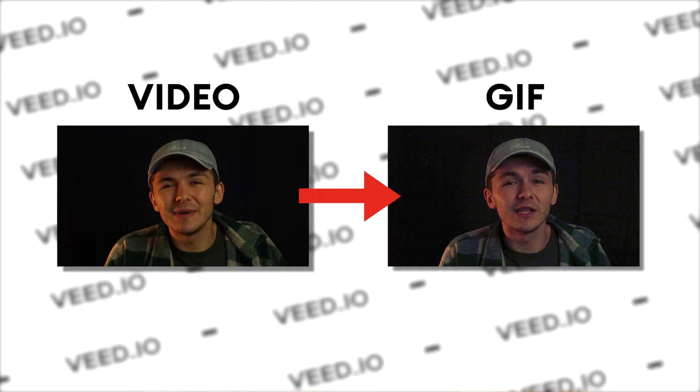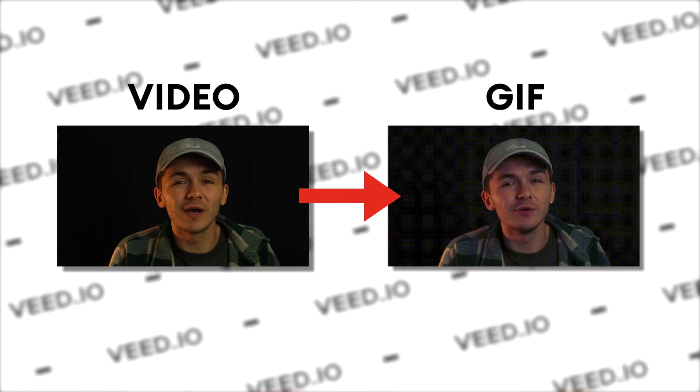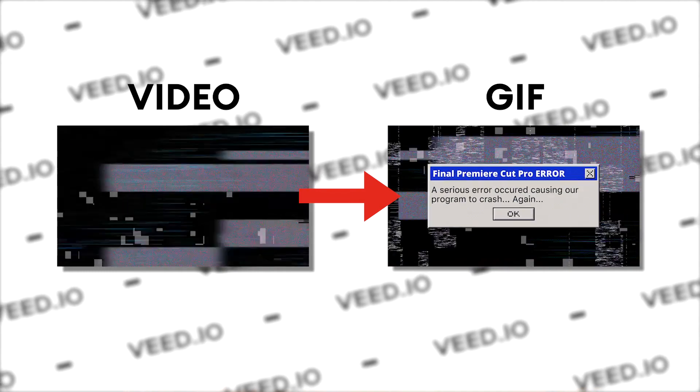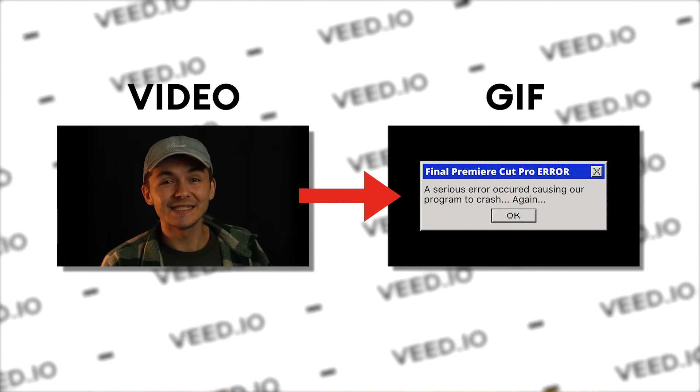Hey everyone, Alec here with Veed. In this video I'm going to be showing you how to make a GIF from a video. So let's say you have a video file, or it could be a YouTube video online, and you want to turn a clip from within that video into a GIF. Well, this is how you do it.